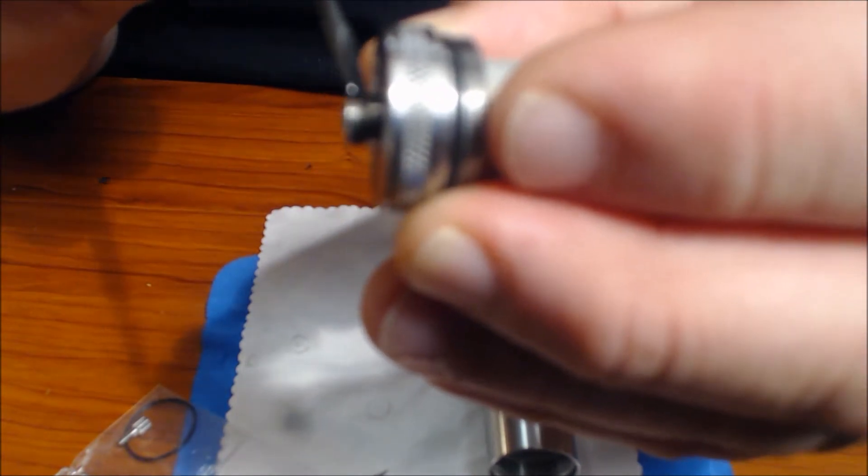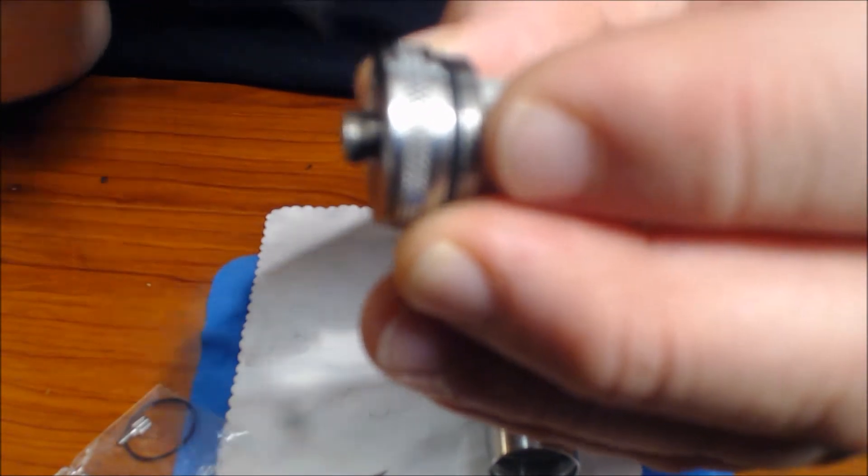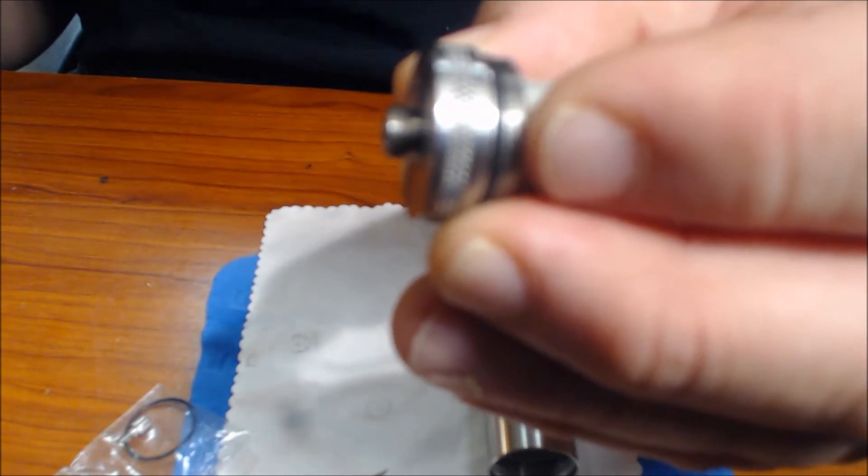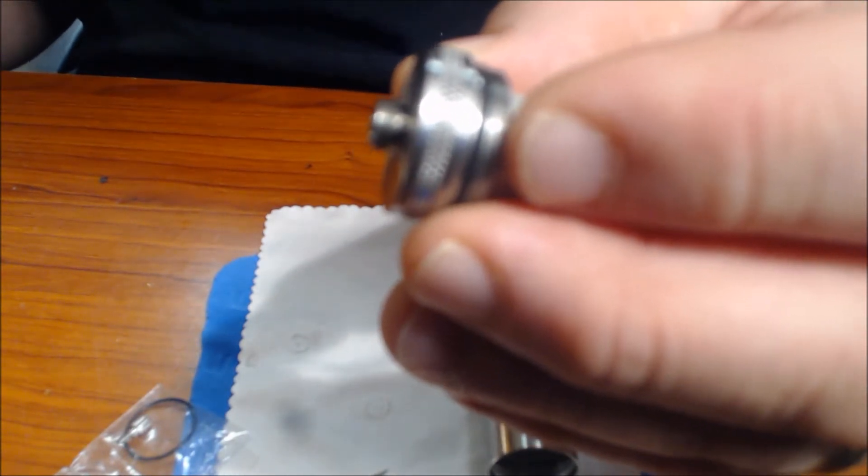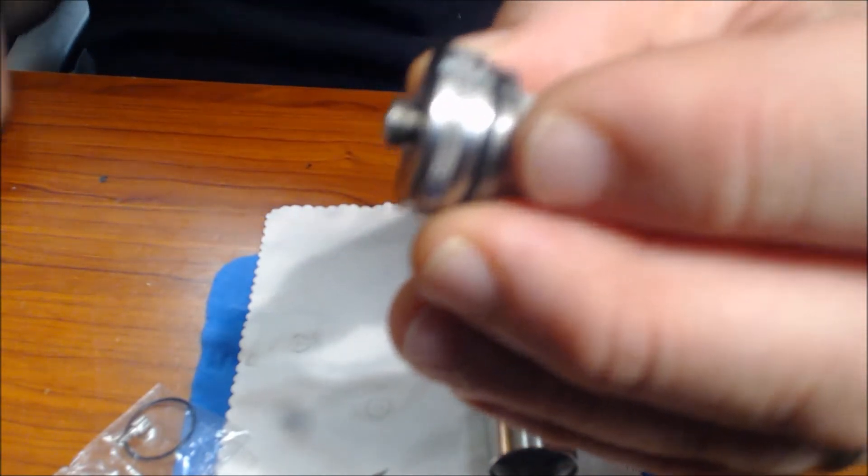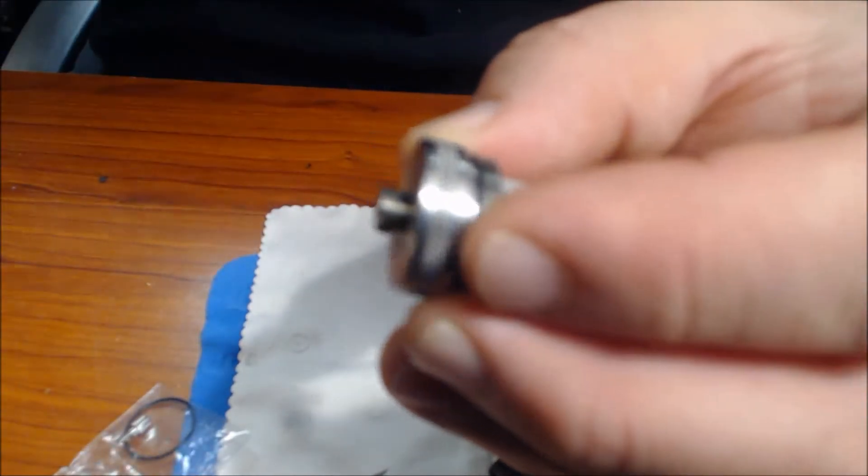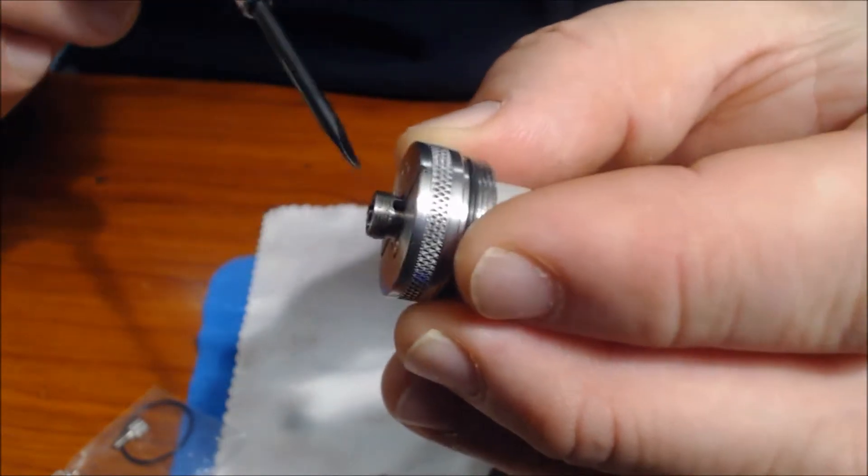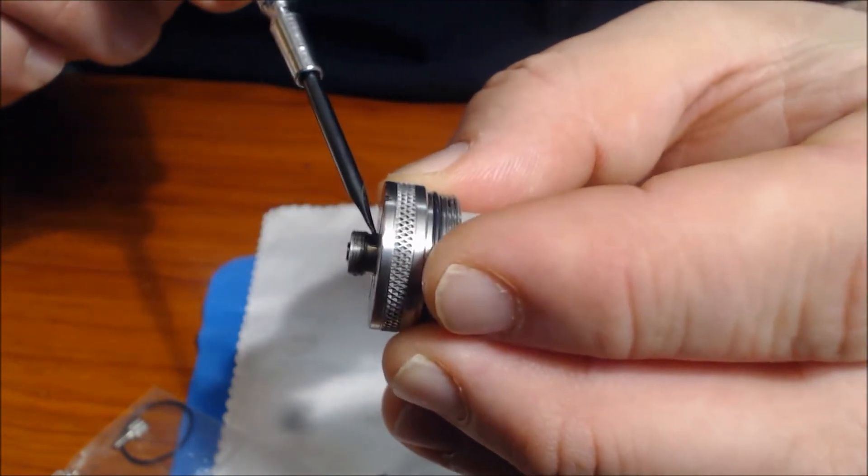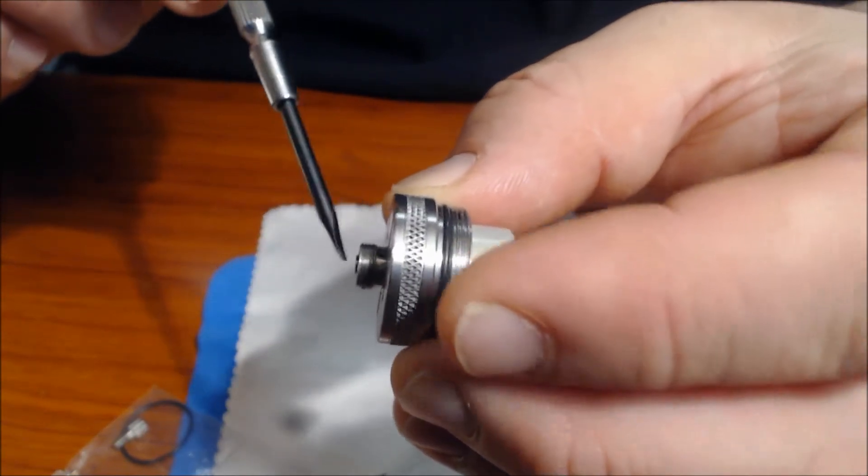When I first received this in the mail, it was like trying to suck a golf ball through a garden hose. It was a terrible tight draw. So what I did was I took a 5/64th drill bit and I hollowed it out a little bit. At first, I took the pin out and then I screwed that in there and opened it up.